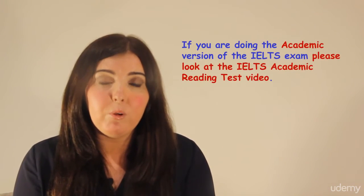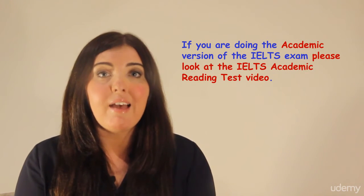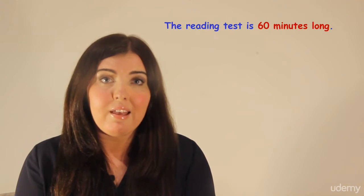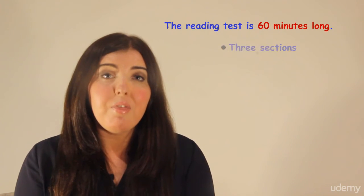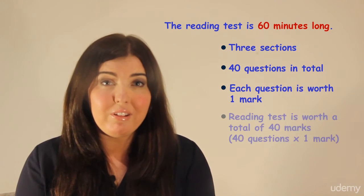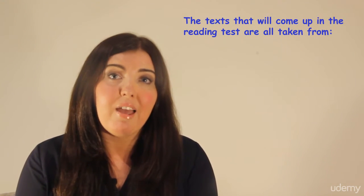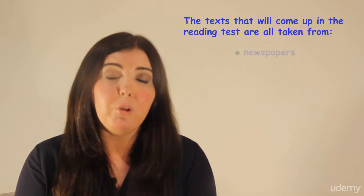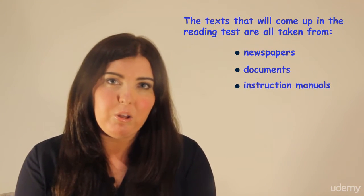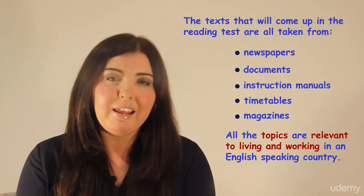If you are doing the academic version of the IELTS exam, please look at the IELTS Academic Reading test video. So let's get started. The General Training reading test is 60 minutes long and there are three sections with 40 questions in total. Each question is worth one mark, so the reading test is worth 40 marks in total. The texts that will come up in the reading test are all taken from newspapers, documents, instruction manuals, timetables and magazines. All the topics are relevant to living and working in an English-speaking country.